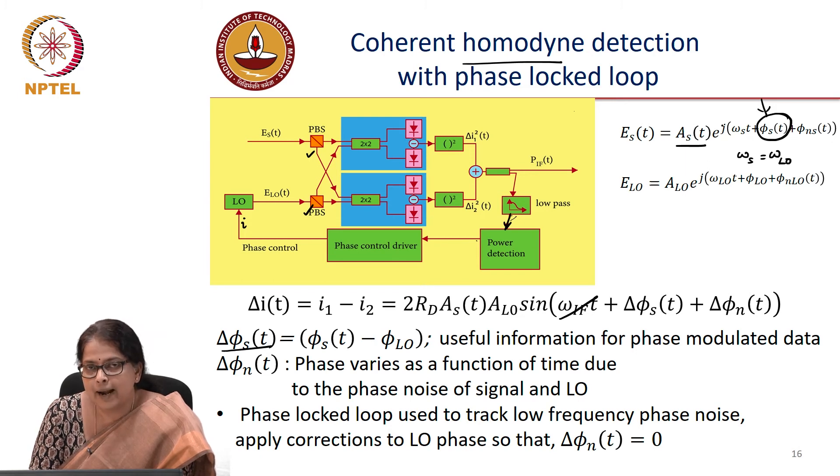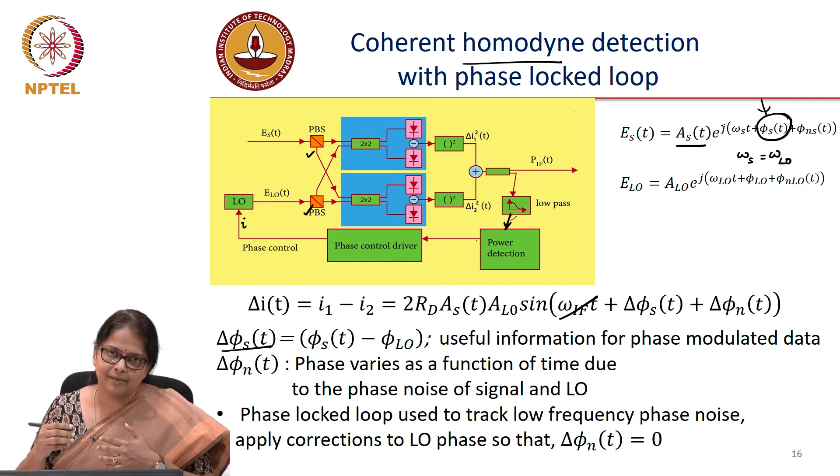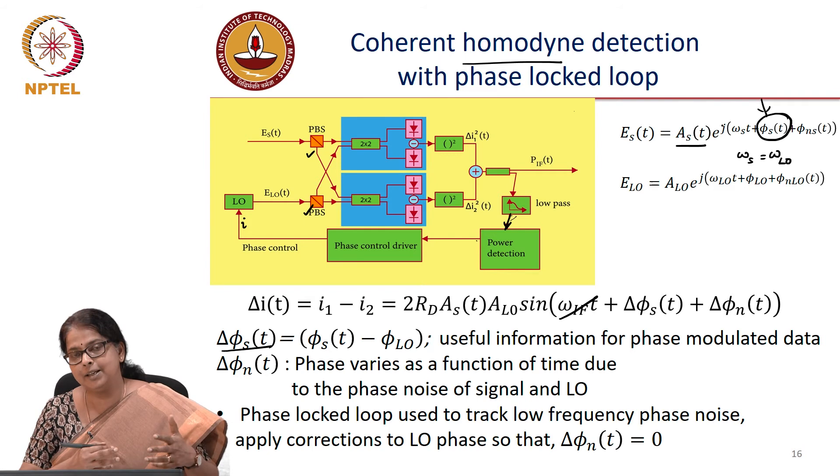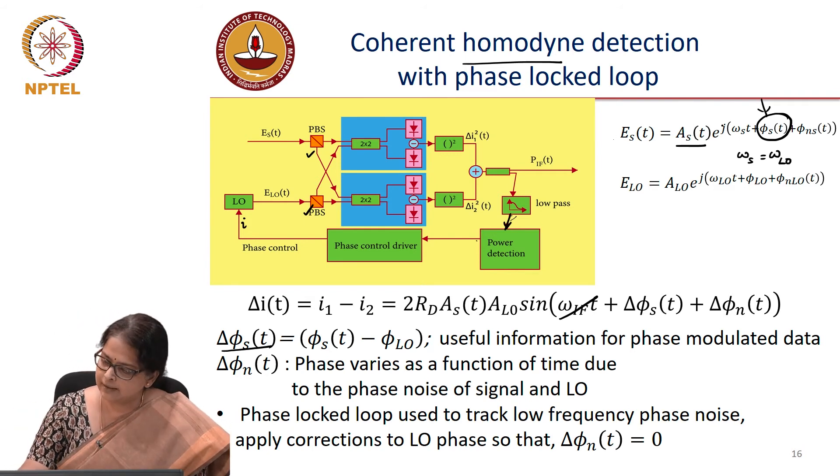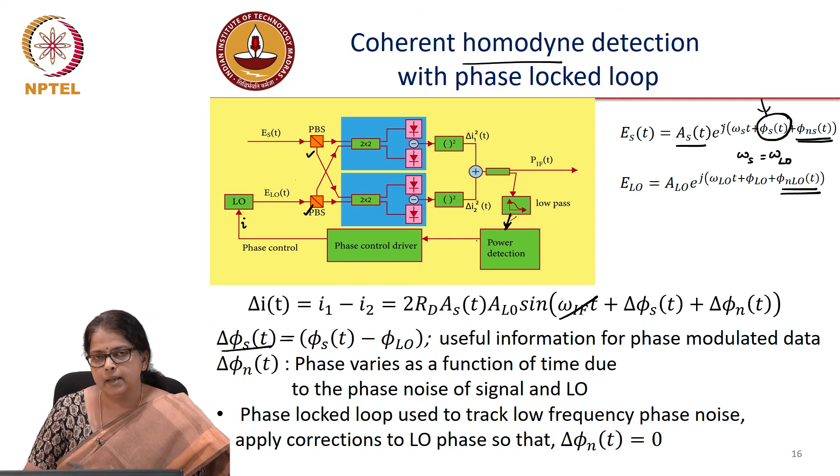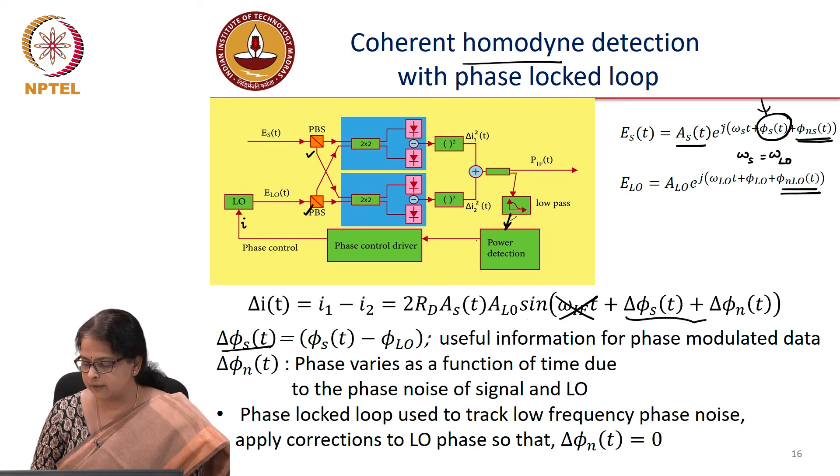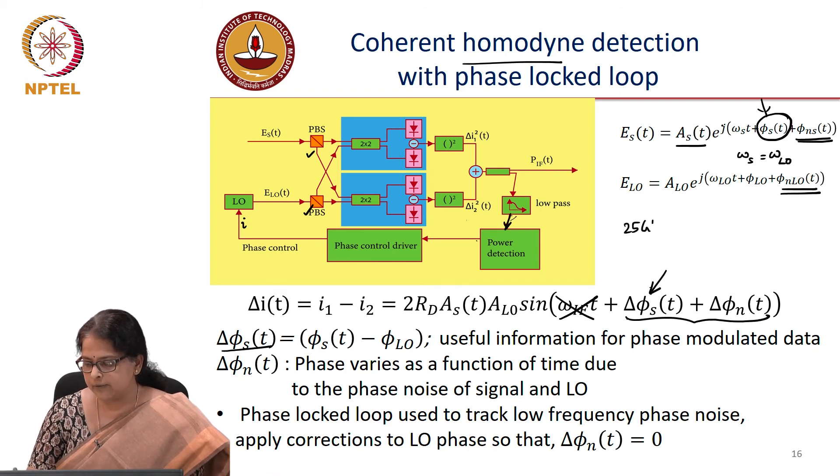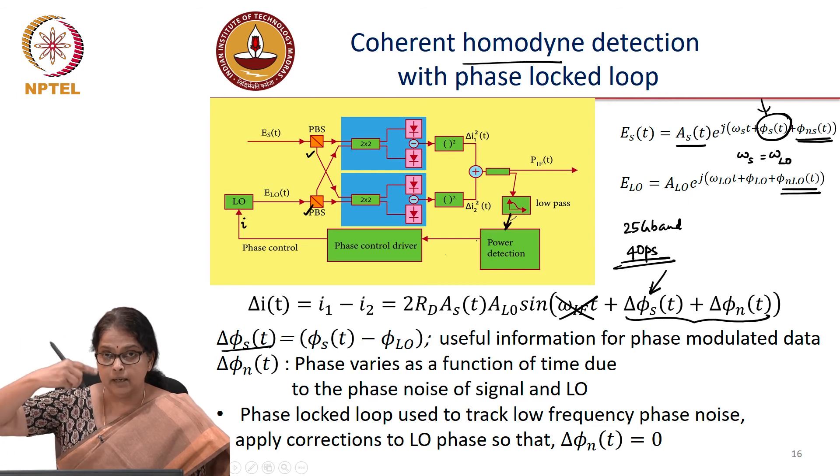We are now trying to address this specific issue that when you have a phase modulation, what about the phase noise of the laser and phase noise of the transmitter laser and the phase noise of the local oscillator? So we are representing the phase noise of the laser, transmitter laser here, and this is the phase noise of the local oscillator. And the output of this system is similar to what we had worked out. It is 2RDAS ALO. Of course, because it is a homodyne system, we can ignore this omega IF and you have this term of which delta phi s is something of our interest. If you are thinking about a 25 gigabyte QPSK system, delta phi s is changing at the rate of 40 picoseconds.